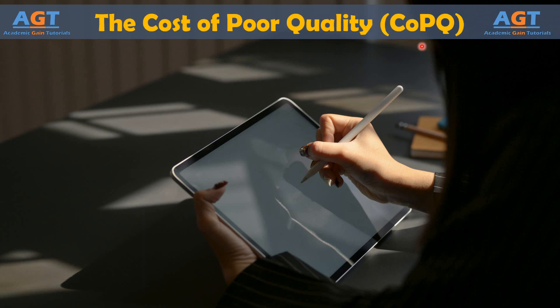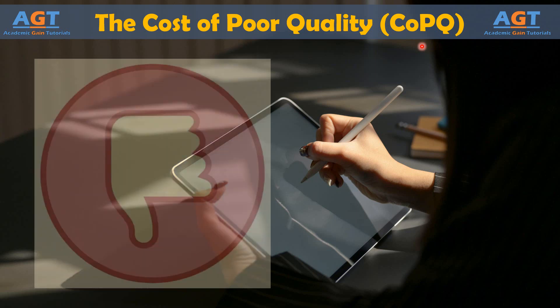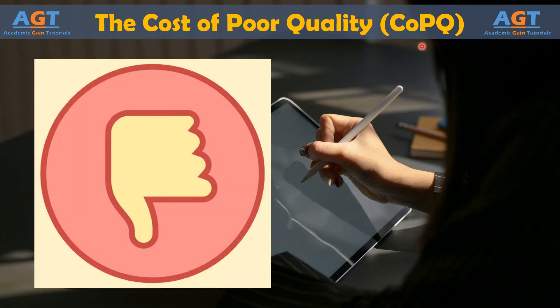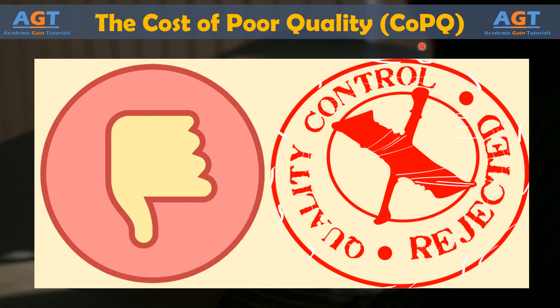Six Sigma teams must always be aware that quality comes at a cost. When talking about quality costs, many organizations consider what is known as the cost of poor quality, or CoPQ. The cost of poor quality is defined as the costs or expenses associated with defects created by a process. Quality actually has a broader cost — avoiding poor quality comes at an expense as well. In some ways, the cost of poor quality is easier to measure than the cost associated with overall quality.